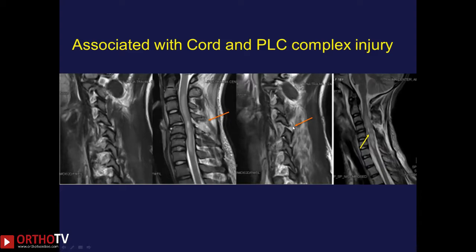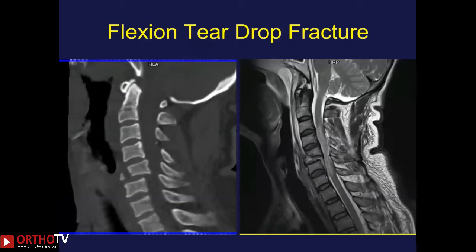Tearing of the facet capsules is clearly seen on MRI, along with uncovering of the facet joint, and obviously to look for any cord injury. A fracture peculiar to the cervical subaxial spine is the flexion teardrop fracture, again caused by a hyperflexion injury, in which there is a fracture of the anterior inferior portion of the cervical vertebra along with retropulsion of the vertebral body. This can also be seen on MRI; it is a highly unstable fracture and can cause severe cervical cord damage.